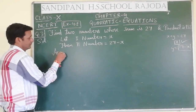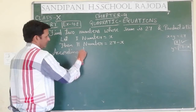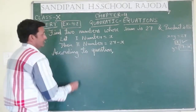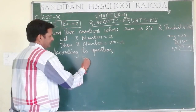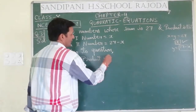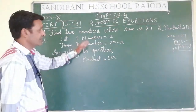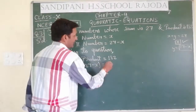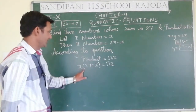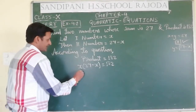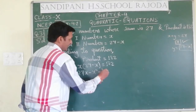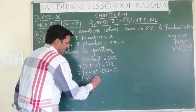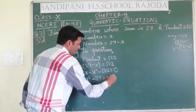According to the question, the product is equal to 182. Product means the product of the first and second number. That is why we multiply: x into (27 minus x) is equal to 182. Expanding: 27x minus x² equals 182, which gives 27x minus x² minus 182 equals 0. Taking minus sign common: x² minus 27x plus 182 equals 0.